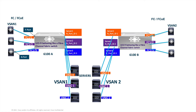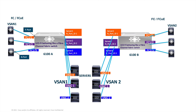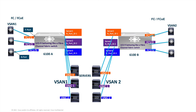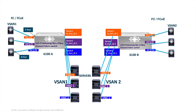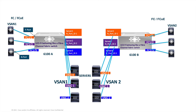The zoning on the fabric interconnect is very basic — it is default zoning on a per-vSAN basis. To provide access security and control of servers accessing the LUNs, we leverage LUN masking on your storage array. We can control which servers are allowed to see which LUNs based on the worldwide names they are coming from.